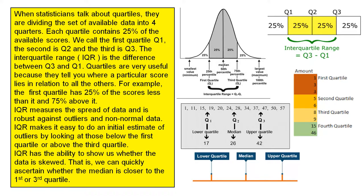IQR has the ability to show us whether the data is skewed. That is, we can quickly ascertain whether the median is closer to the first or third quartile.